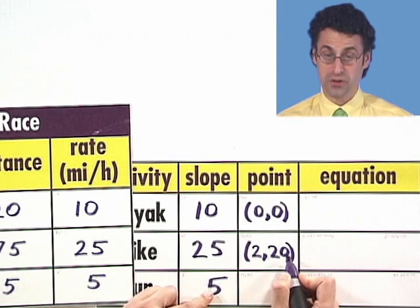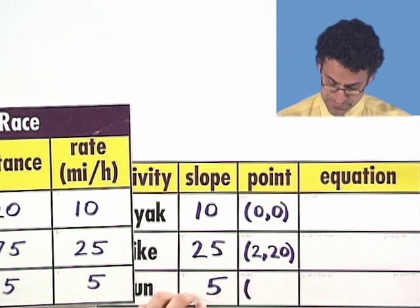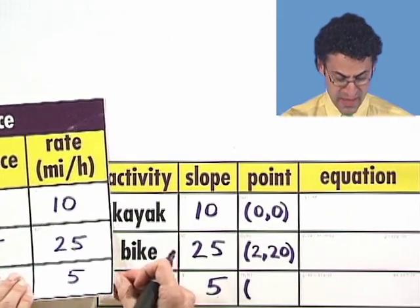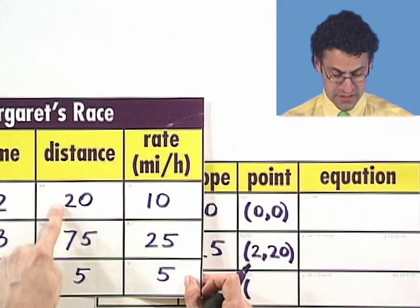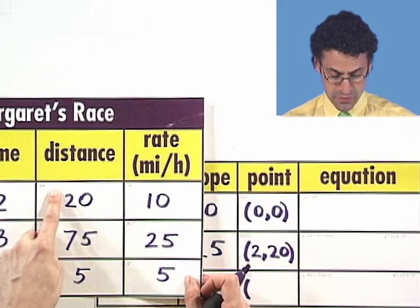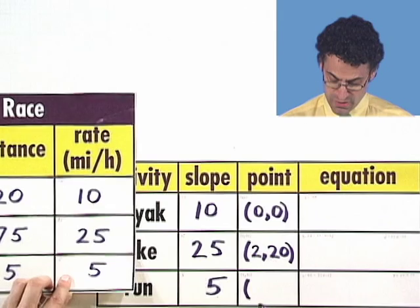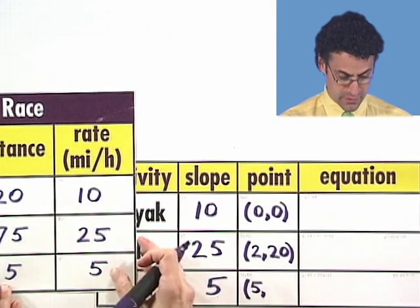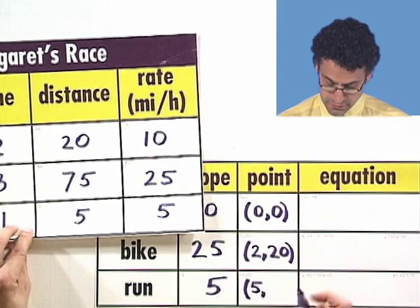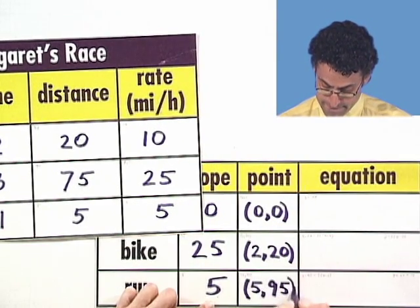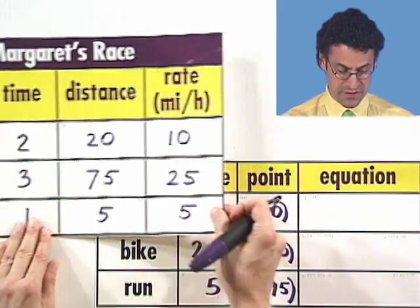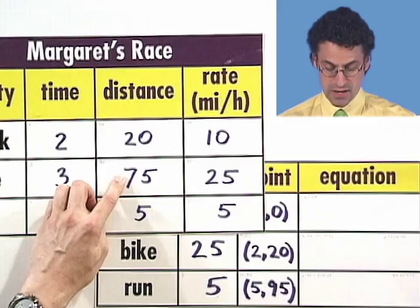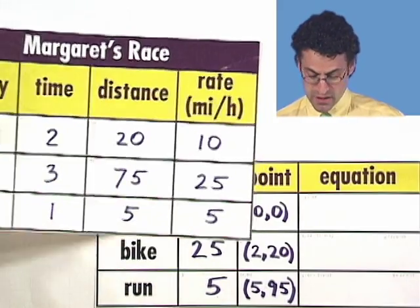Right? Two hours later, she's located at 20. And finally, where is she when she starts the run? Well, we can figure that out because she is how far into the entire adventure? She's 20 plus 75, which is 95. So we know that, and she starts the run, which is at 5. She's at 95. Right? So five hours later, 2 plus 3 is five hours later. She's traveled 95 miles. All right.